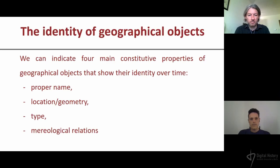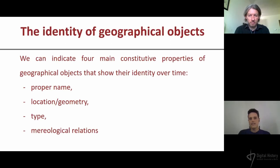If we were to generalize a little bit the identity of geographical objects, we could say that there are four main properties of identity which keep the object — its identity — over time. The first is the proper name.